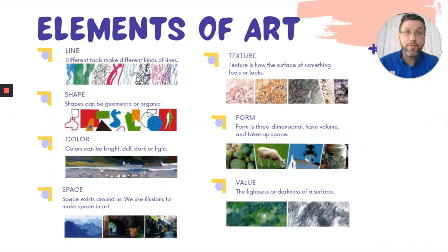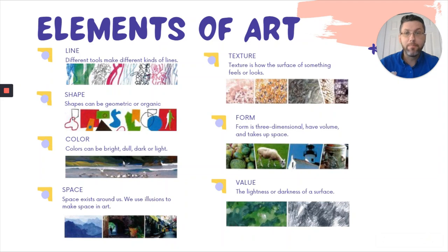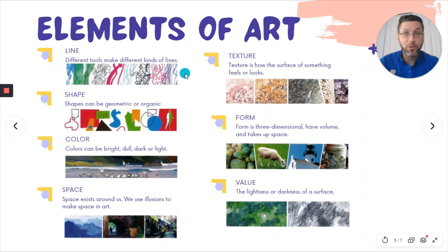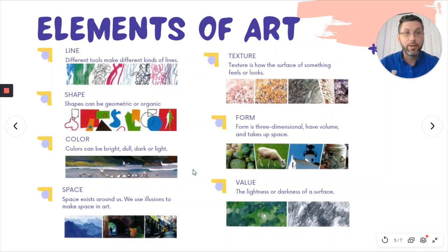The elements of art — we've focused on three of them so far: line, shape, and color. But there are seven elements in total, and these are kind of the words that an artist uses to tell their story. Lines can be made with different tools. Shapes can be geometric, like in math class, or organic, a more natural shape. Colors can be bright, dull, dark, or light, and we learned about primary, secondary, warm, cool, and complementary colors.